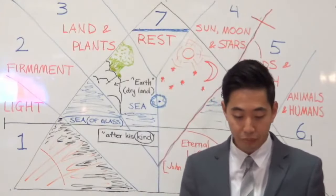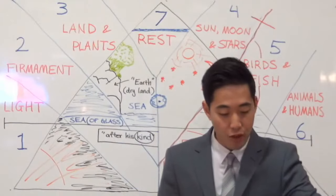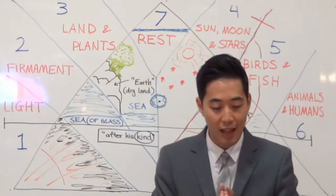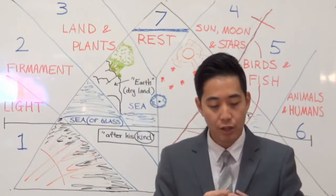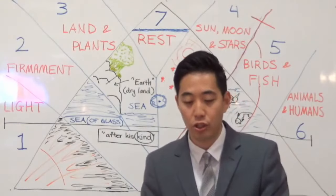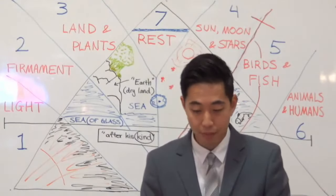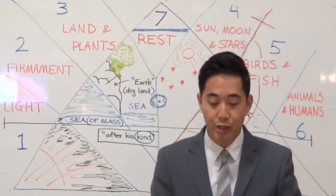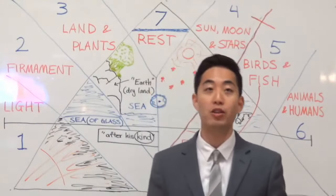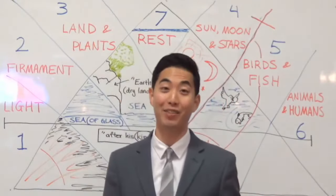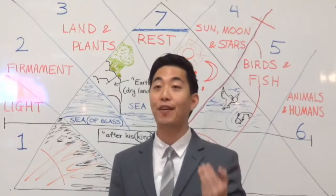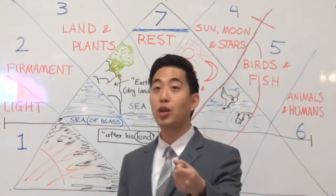Returning to our main text at verse 20: God said let the waters bring forth abundantly — reproduce abundantly, overflowingly — the moving creature that hath life. It takes a large amount of water, where it comes forth abundantly, to create creatures that move and have life. This matches with John chapter 7, verse 38: 'He that believeth on me, as the scripture hath said, out of his belly shall flow rivers of living water.' Verse 39 reads: 'But this spake he of the Spirit, which they that believe on him should receive, for the Holy Ghost was not yet given, because Jesus was not yet glorified.'